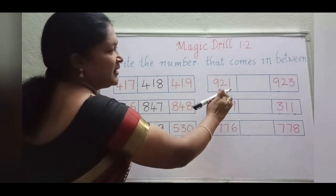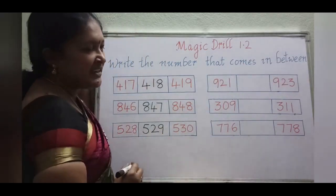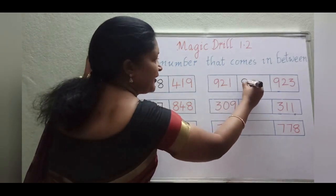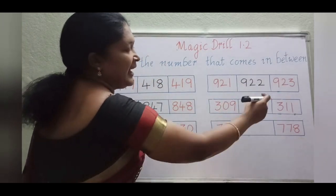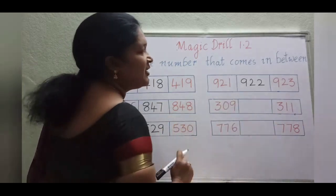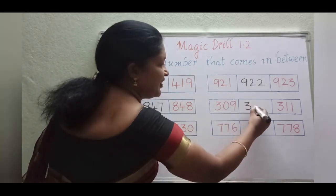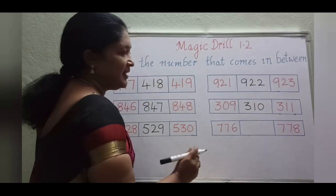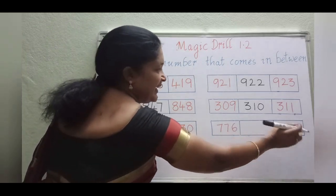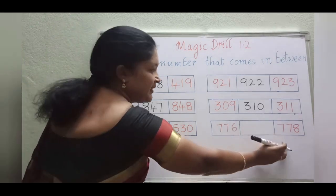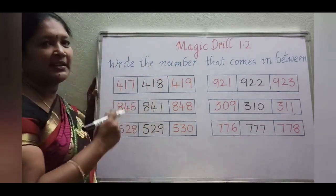And see the next numbers: 921 and 923 — the between number is 922. Next: 309 and 311 — the between number is 310. And next numbers: 776 and 778 — the between number is 777. So these are the between numbers.